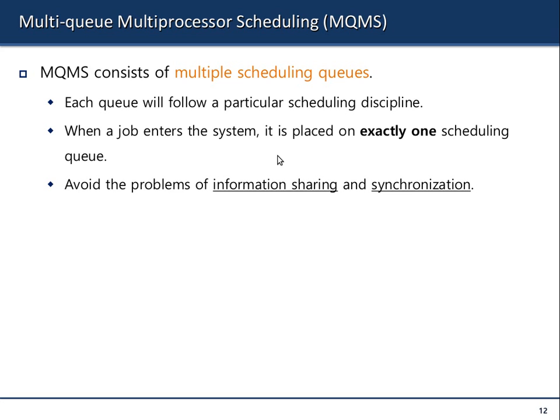The solution is to use multiple queues for each processor. Instead of just having one queue, you associate a queue for each processor. All of the processes will go to a given CPU's queue. This will avoid information sharing and basically synchronization, because once a process gets assigned to a queue, you are guaranteed that process will be assigned to that CPU.